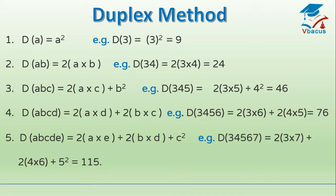Square of a 3-digit number: duplex of the 3 digits plus square of the center digit. So, first and last — that is 3 and 5 — multiply them and double it. 3 fives are 15 and double of 15 is 30. Square of 4 is 16. Add them up — it will become 46.